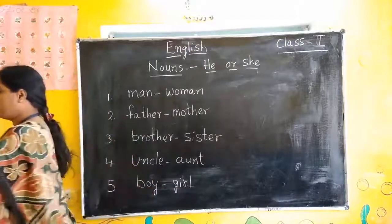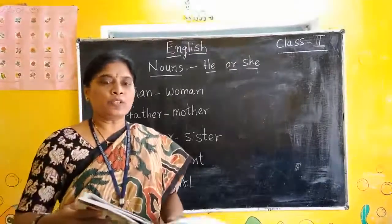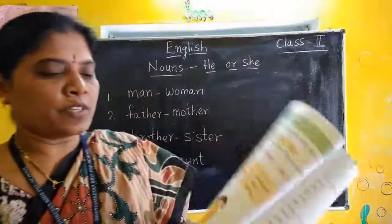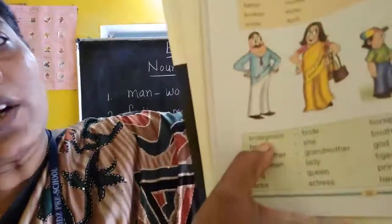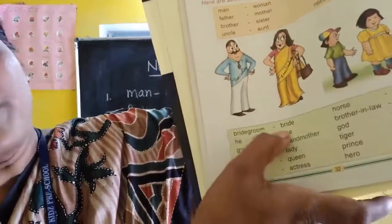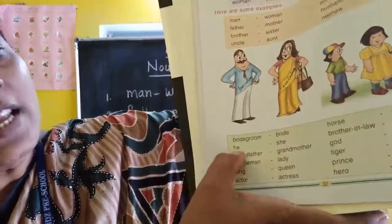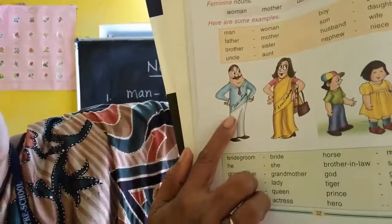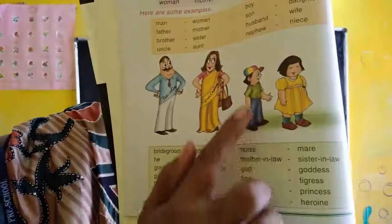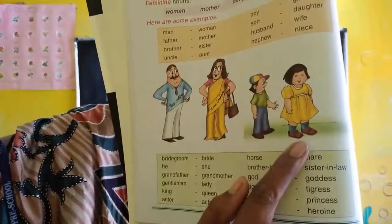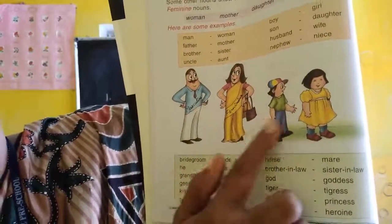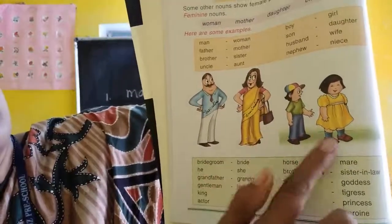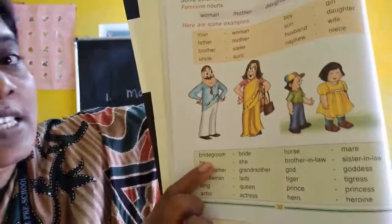Now take out your term one book, page number 32. Here some more words are given. We will repeat those words. Look here. Bridegroom, Bride — he, she. Here pictures are also given. Father, mother and two children. Boy, girl. Dressing is different, no? How boys are dressing and how females are dressing? We can classify by seeing their dressing style also.